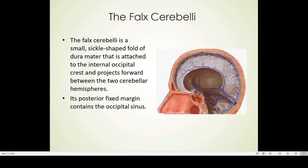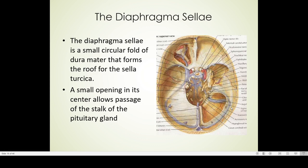The posterior fixed margin of the falx cerebelli contains the occipital sinus. The diaphragma sellae is a very small circular fold of dura mater that forms the roof for the sella turcica. A small opening in its center allows for the passage of the stalk of the pituitary gland, called the infundibulum.